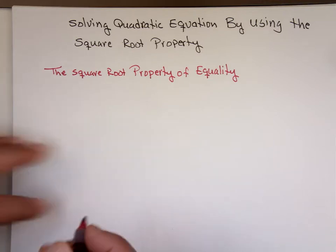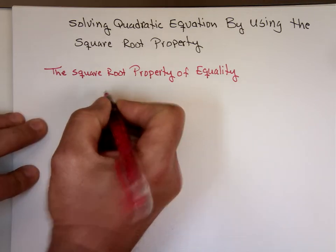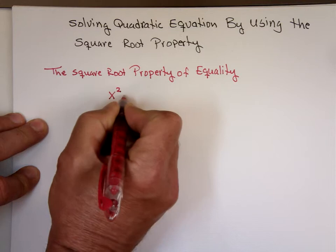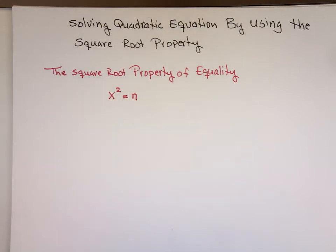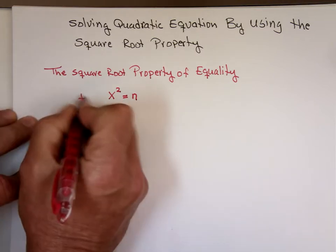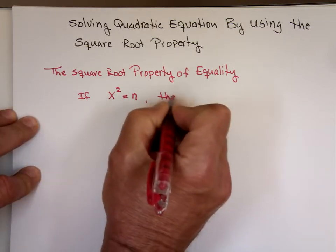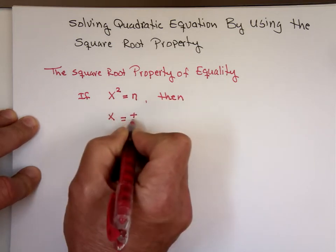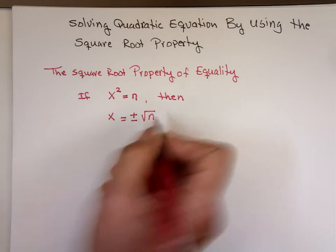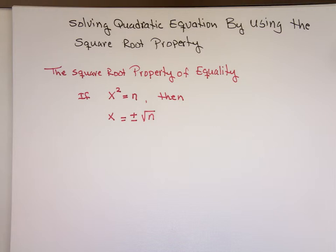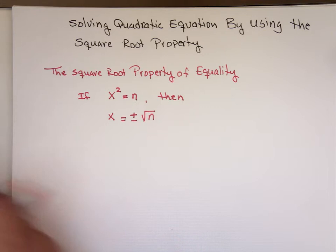The square root property of equality says if you have x squared equals a number n — something squared equals a number — then to solve for x it's always going to be plus or minus the square root of that number. You have two answers: one positive and one negative. This method can only be used when you have something squared equals a number.